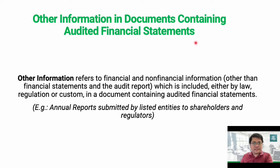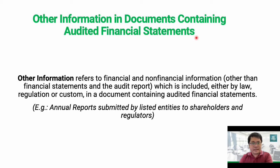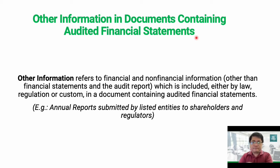And finally, this is the last issue: other information in documents containing the audited financial statements. When the client issues the financial statements together with our auditor's report, sometimes it would be included in another document containing another report from management, from the president or leadership, before issuing it to the public. An example would be an annual report, which would contain the president's report, management discussion and analysis, and the financial statements together with our audit report.